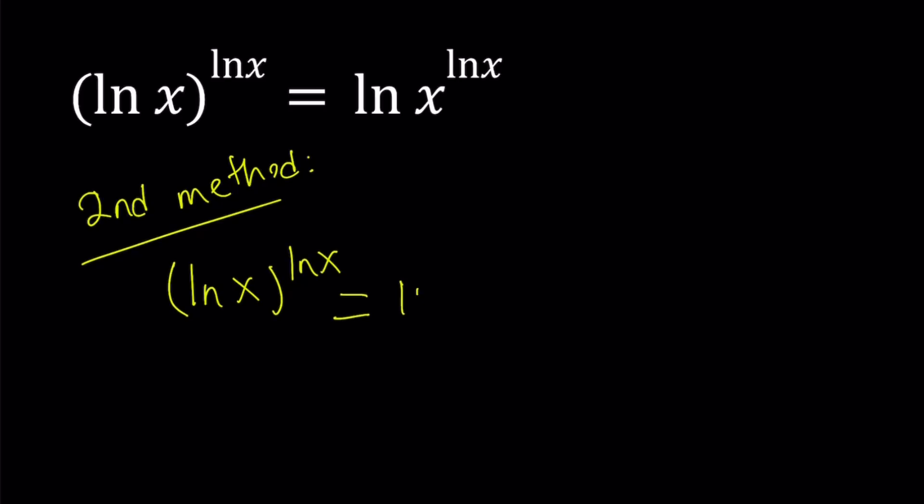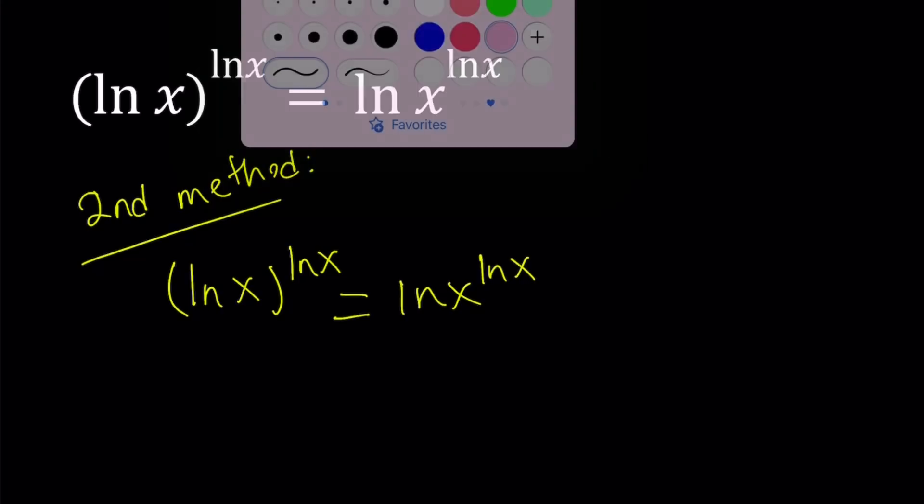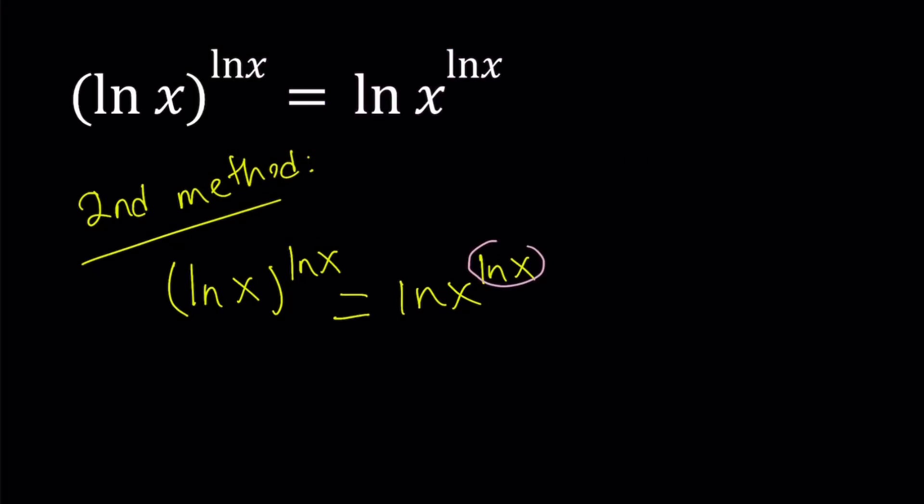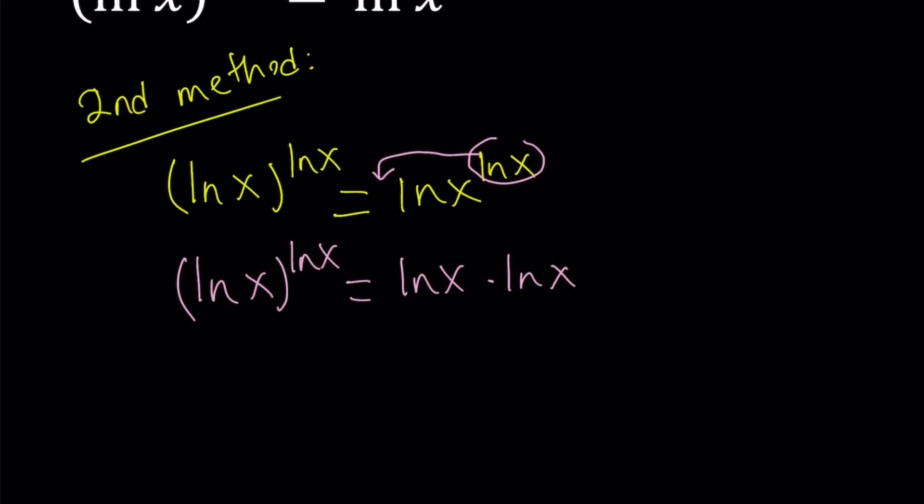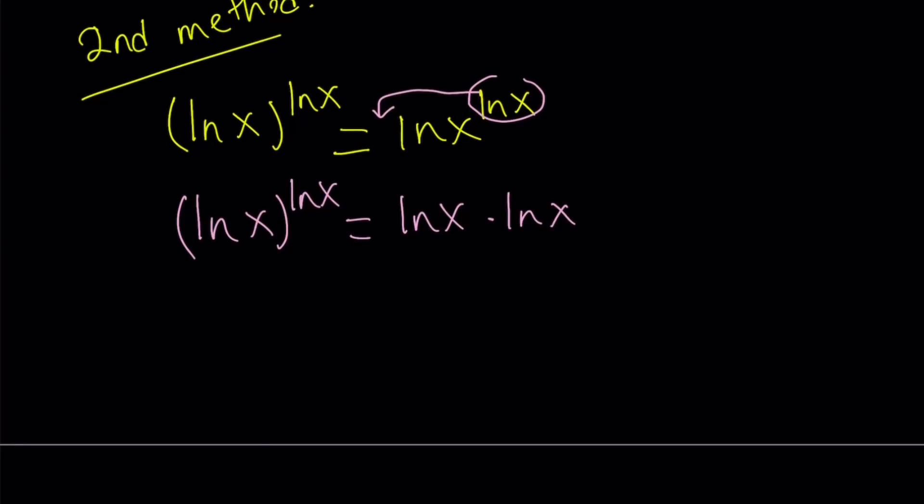On the right hand side, notice that x is an exponent, right? So by using the properties, we can move this to the front. So this becomes ln x times ln x. On the right hand side, the left hand side stays unchanged. And then we can just write the right hand side as ln x to the second power.